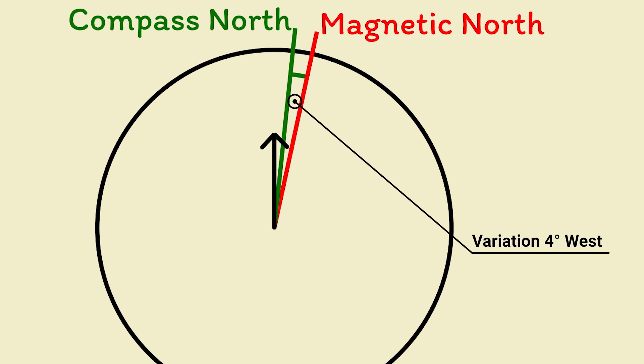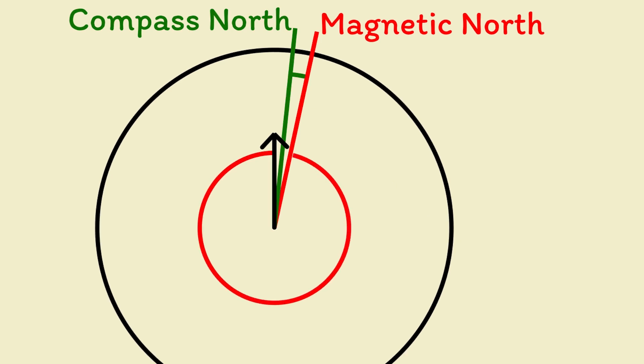Again, we've already worked out that our course was 348 degrees from the magnetic north pole. To find the compass course to steer, we want the bearing of our course from the compass north pole instead. As deviation is west, we add the 4 degrees to 348 to find a course of 352 degrees compass.